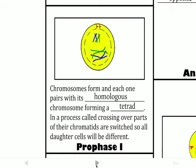The first part of meiosis I is prophase 1. In this phase, we have the nuclear envelope breaking down — we can see the dotted line there. We also have the chromosomes forming Xs, just like in mitosis. But instead of just floating freely in the cytoplasm, they're going to form pairs. The short ones will pair up with each other, and the long ones will pair up with each other. These pairs of chromosomes are called tetrads — they're called a tetrad because they have four individual chromatids: one, two, three, four. All together, they make a tetrad.